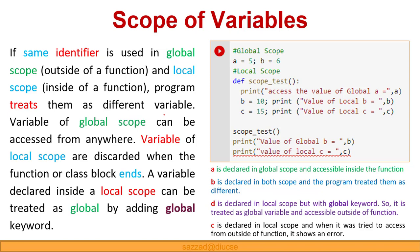If you are using the same variable name as both a local and a global, the Python compiler will treat that same-named variable differently — the local variable will be treated as local and the global variable will be treated as global, although they have the same name. Variables of global scope can be accessed from anywhere, and variables of local scope are discarded when the function or class block ends, so the variable value is lost.